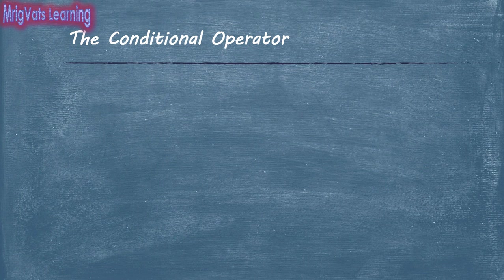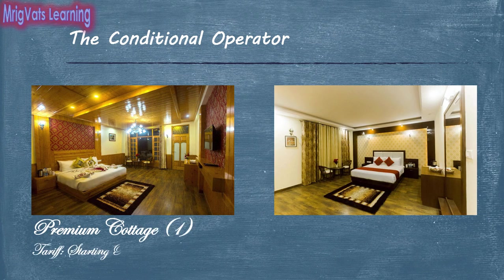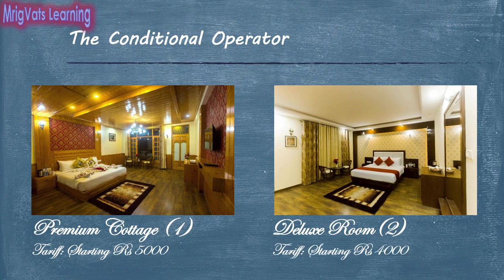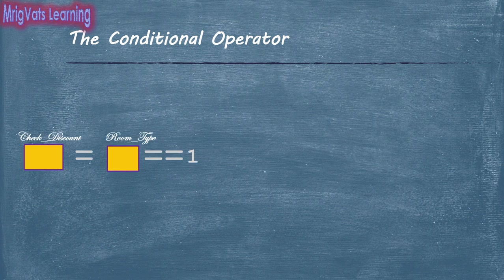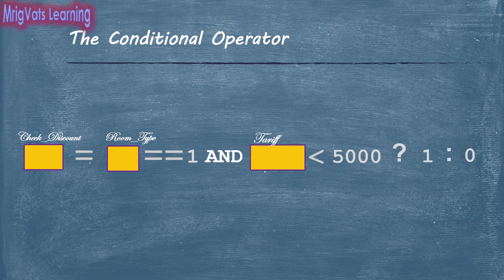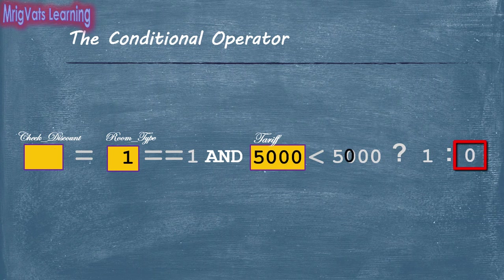For example, Kamna Hill Resort has two types of rooms: premium cottage coded as 1 and deluxe room coded as 2. Minimum tariff of these rooms is Rs 5,000 and Rs 4,000 respectively. To check if any discount is given on the premium cottage, you can use the expression: checkDiscount = roomType == 1 && tariff < 5000 ? 1 : 0. Here, if room type is 1 and tariff is less than 5000, value 1 is assigned to checkDiscount; else value 0 is assigned, meaning no discount is given on the room.